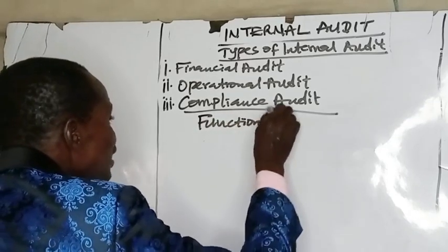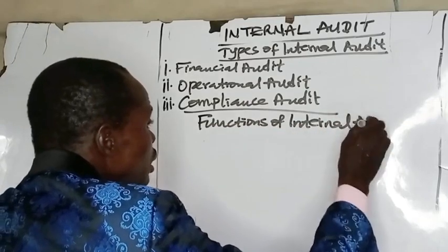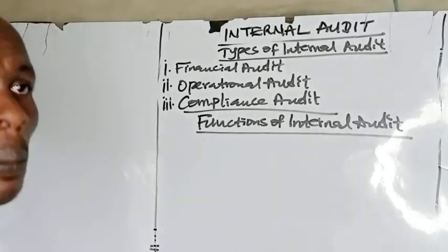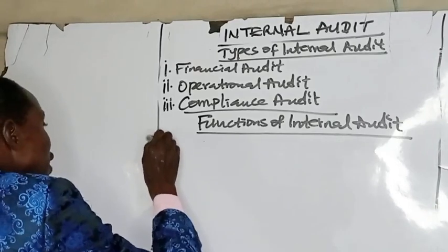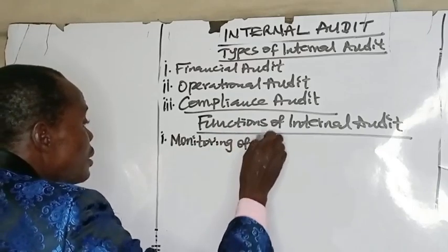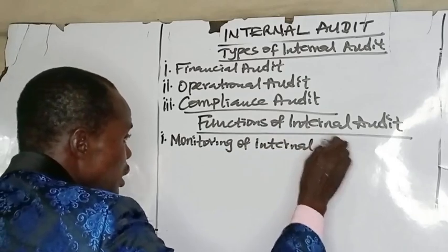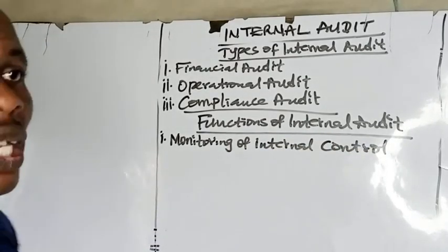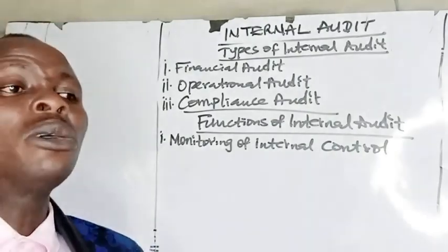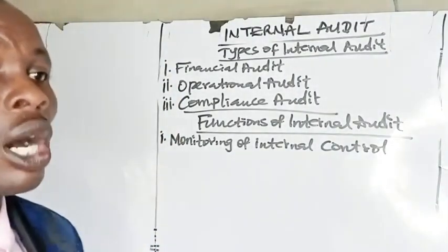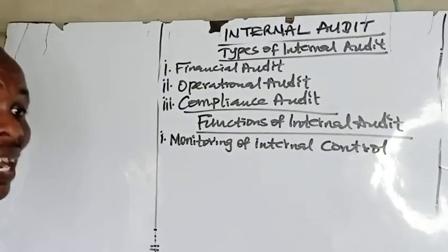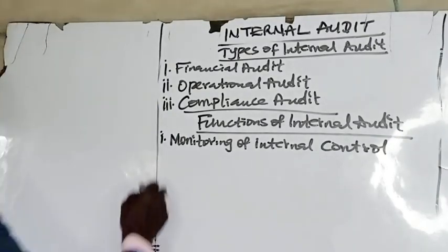Functions of internal audits. Number one function is monitoring of internal controls. Internal audit helps to monitor the internal controls — internal audit departments are usually given the responsibility by the management to review the controls, monitor operations, and make recommendations for improvement.